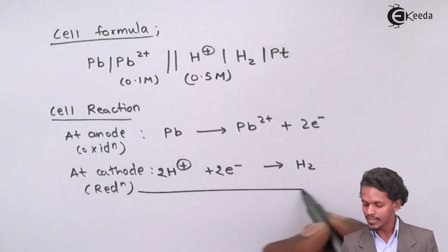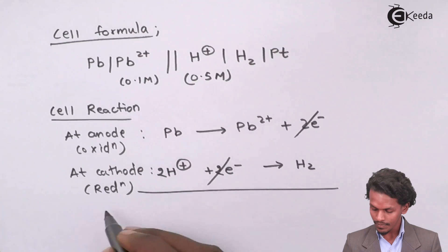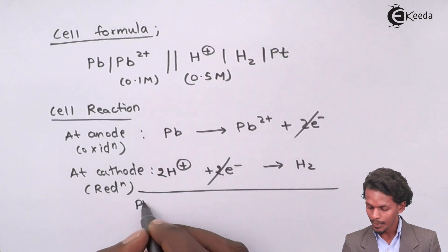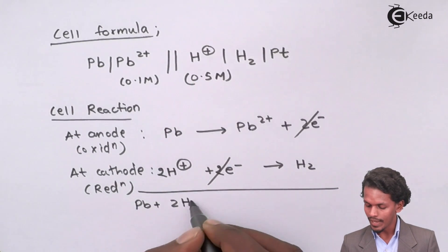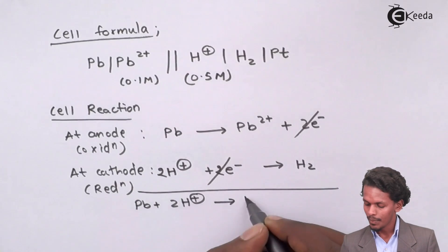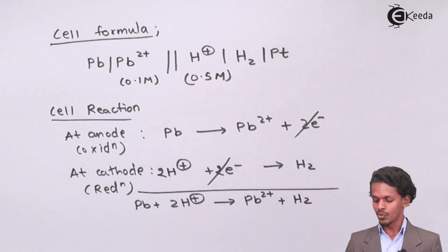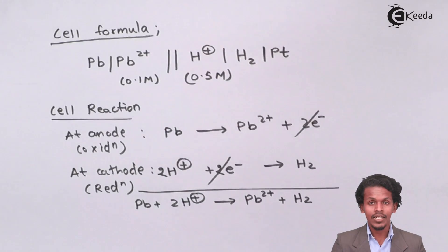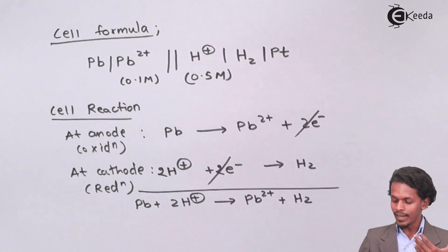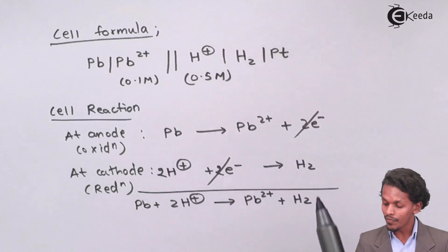Therefore, the overall net cell reaction would be Pb plus 2H plus gives Pb2 plus plus H2, which is present in gaseous form.